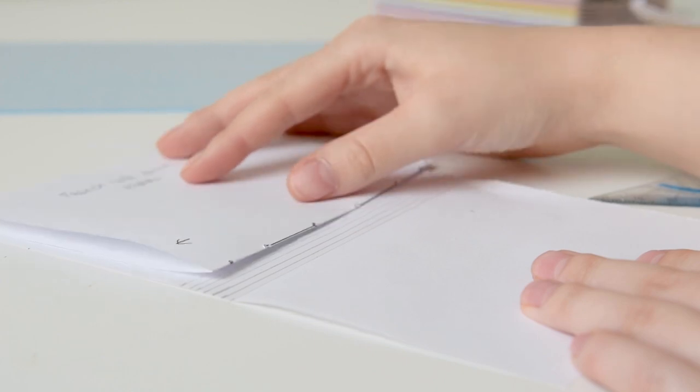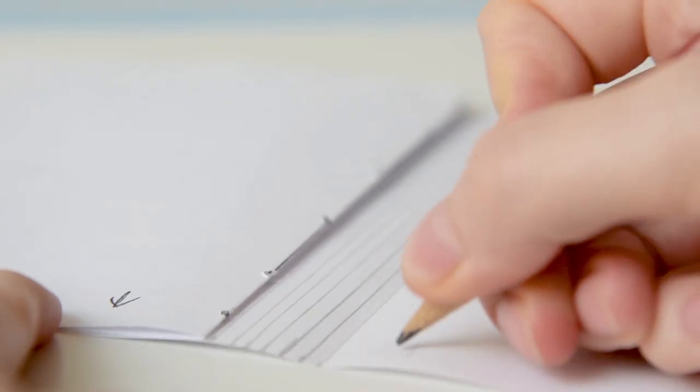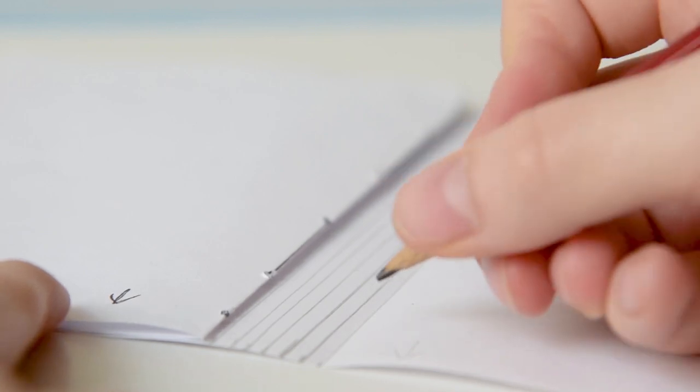Now, you want to take the first template you created and line it up with your top line. Make sure to mark which side is up. Then mark on the line where each hole in your signature goes.